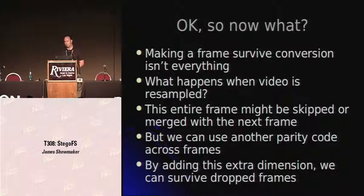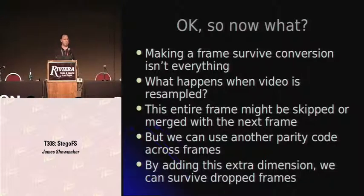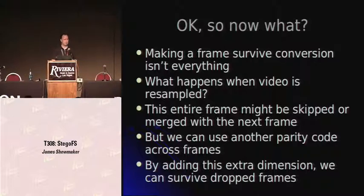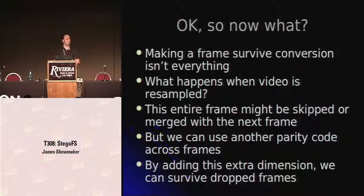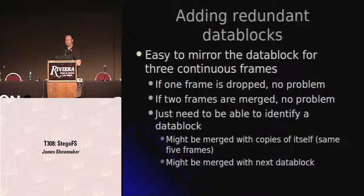Mostly what I've been covering so far is making one frame survive conversion — one image, one point in time. Take for example a video at 30 frames per second, and the engine you're uploading to decides to take it down to 15 frames per second. That's going to chop out every other frame. And if the ratio between the two frame rates is not evenly divisible, you'll have a problem where new artifacts are created when they take two frames and average them together. To make our encoding survive resampling, we're going to want to mirror the encoding between frames — so we can survive dropped frames and the extra artifacts that sometimes appear when resampling at a non-divisible rate.